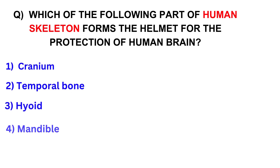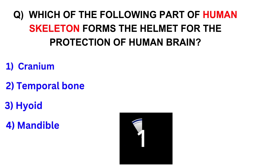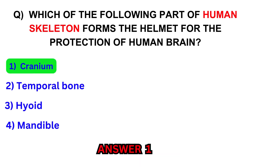Which part of the human skeleton forms the helmet for the protection of the human brain? Cranium, temporal bone, hyoid, or mandible. Answer: Cranium.